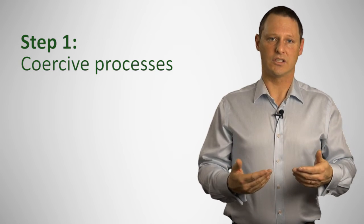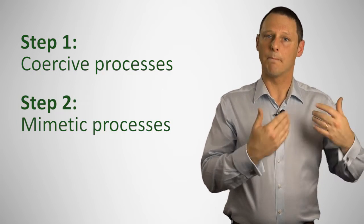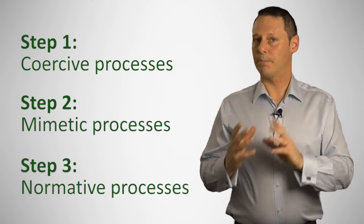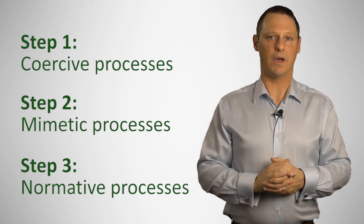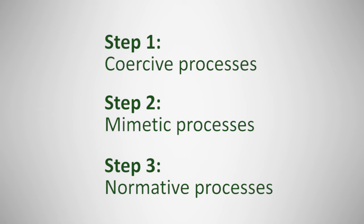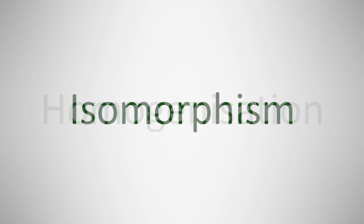Mimetic behaviour, which is the mimicking or copying of others, leads to group norms and peer pressure about how an organisation should behave. All of these actions together explain why competitors start acting in a similar way. Homogenisation or isomorphism are the terms used to describe this process.